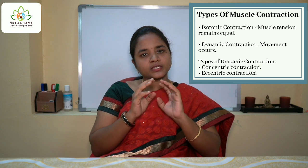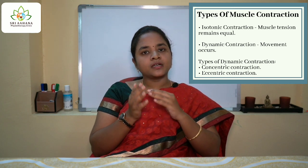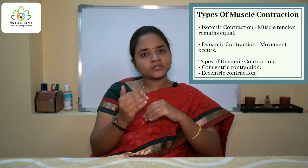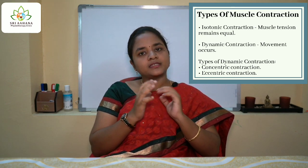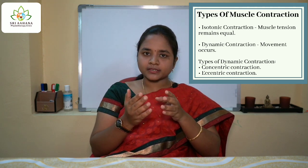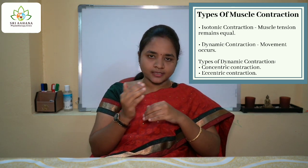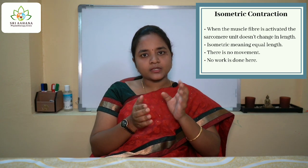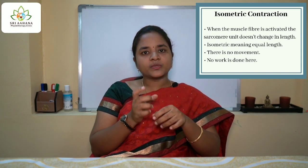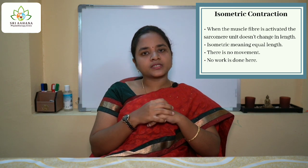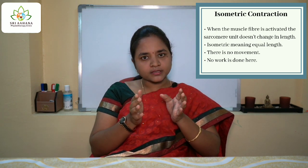When you talk about dynamic contractions, as the name suggests, some movement is going to occur. In dynamic contractions we have the concentric type of contraction and the eccentric type of contraction. In concentric type of contraction the muscle will become shortened, and in the eccentric type of contraction the muscle will become lengthened. There is one more type of contraction called the isometric contraction — by the name it means equal length — so when this isometric contraction occurs the length of muscle will not change.